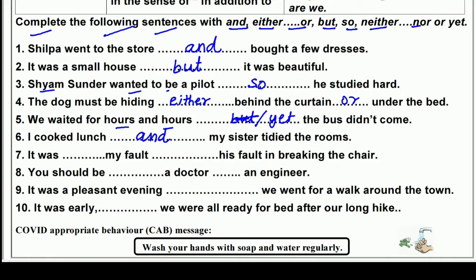'It was __ my fault __ his fault in breaking the chair.' Here 'neither...nor' fits — 'it was neither my fault nor his fault in breaking the chair.' That means it was neither my fault nor his in breaking the chair. Next: 'You should be __ a doctor __ an engineer.' Here 'either...or' fits — either a doctor or an engineer.